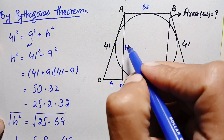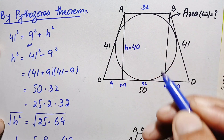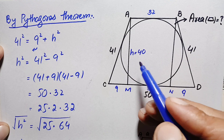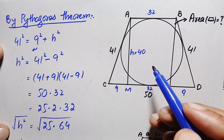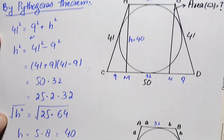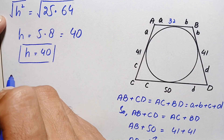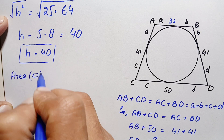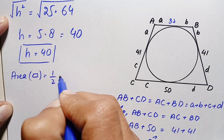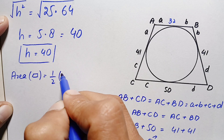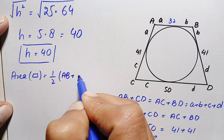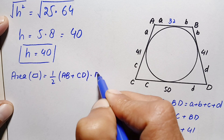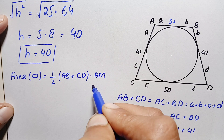Now we know the lengths of both parallel sides and the height of the trapezoid, so we can find its area. The area of trapezoid ABCD equals half times the sum of the two parallel sides (AB + CD) times the height h.